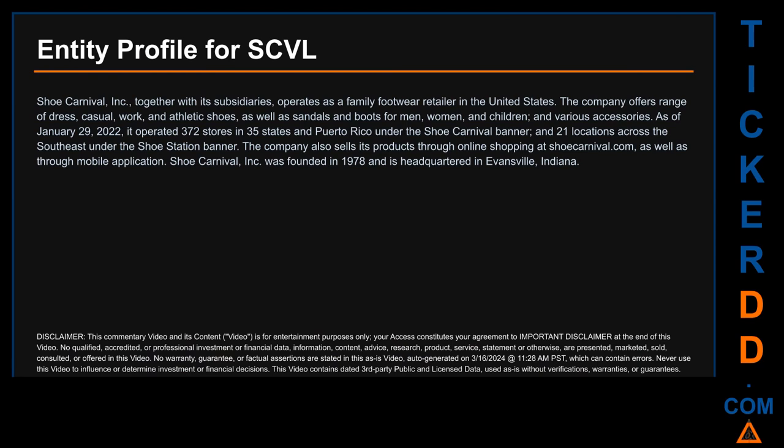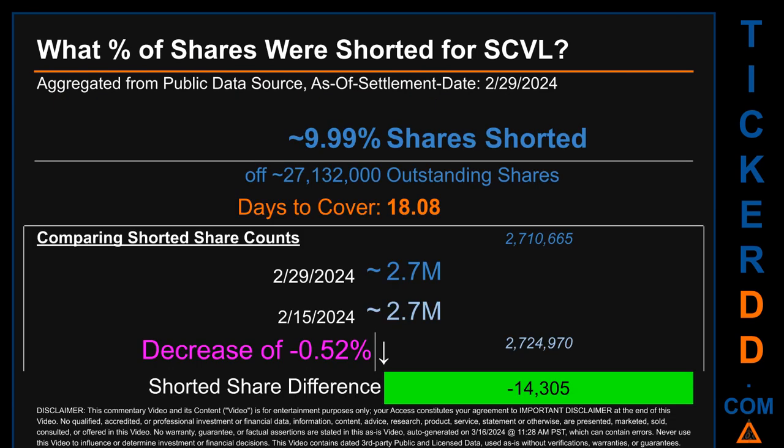Hello, my name is Carl. I searched the public web to find information about the company behind this ticker. Shoe Carnival Inc, together with its subsidiaries, operates as a family footwear retailer in the United States. The company offers a range of dress, casual, work, and athletic shoes, as well as sandals and boots for men, women, and children, and various accessories. As of January 29, 2022, it operated 372 stores in 35 states and Puerto Rico under the Shoe Carnival banner, and 21 locations across the southeast under the Shoe Station banner. The company also sells products through shoecarnival.com and a mobile application. Shoe Carnival Inc was founded in 1978 and is headquartered in Evansville, Indiana.